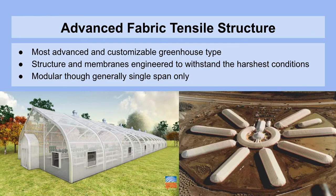Next, we take a look at advanced fabric tensile structures. These are the most advanced and highly customizable greenhouse type. The structure and the membranes are engineered to withstand the harshest conditions imaginable. They're modular though generally single span only and can be connected through tunnels. These greenhouses can truly be adapted to any environment possible, and depending on where you're using it, the budget and the crop, you'll be using different components of environmental control to make it suitable for your needs.